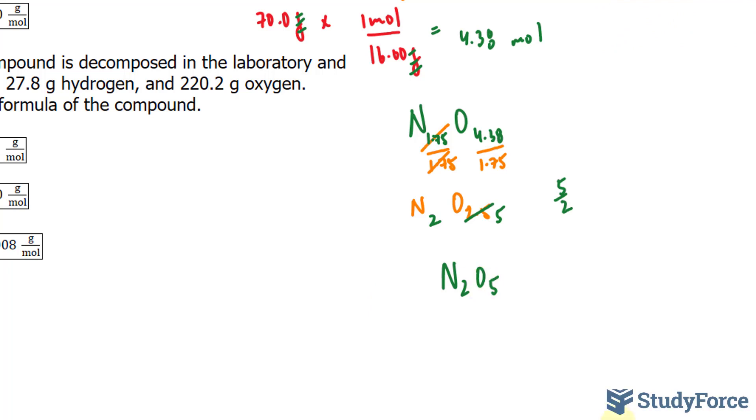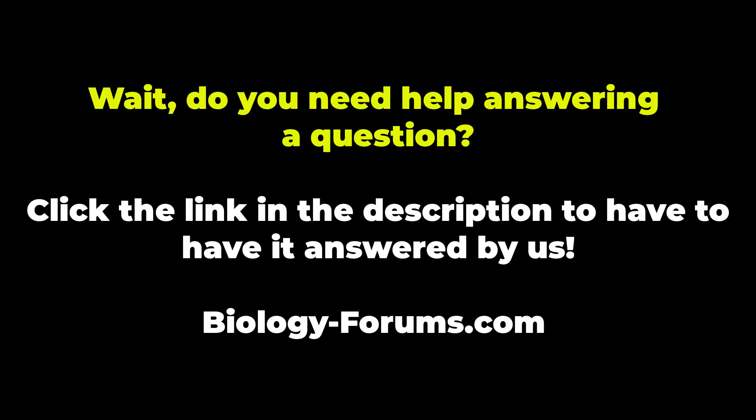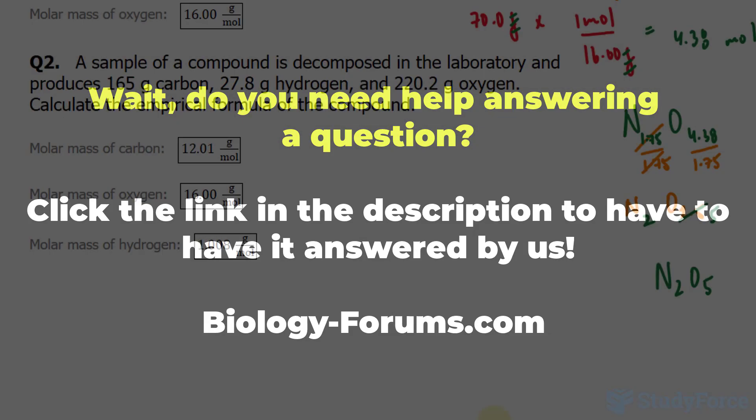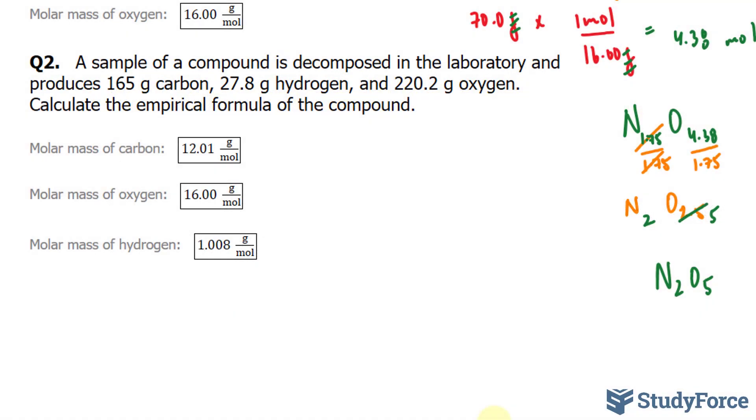So our answer is N2O5 and the chemical compound here is dinitrogen pentoxide. Let's move on to question 2. A sample of a compound is decomposed in the laboratory and produces 165 grams of carbon, 27.8 grams of hydrogen, and 220.2 grams of oxygen. Calculate the empirical formula for the compound.